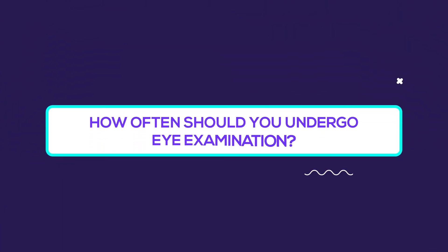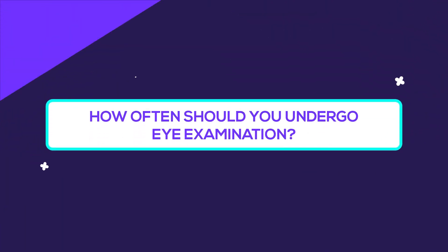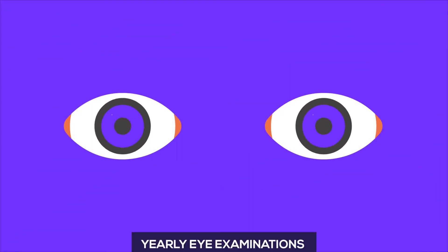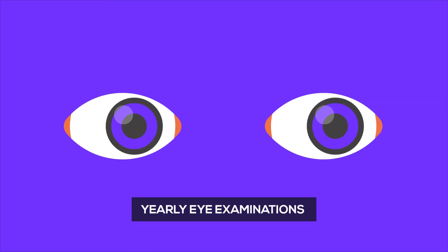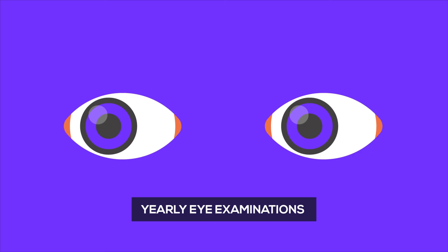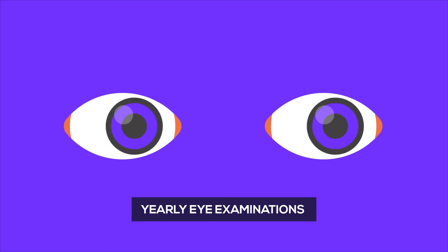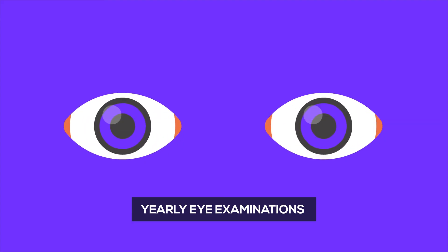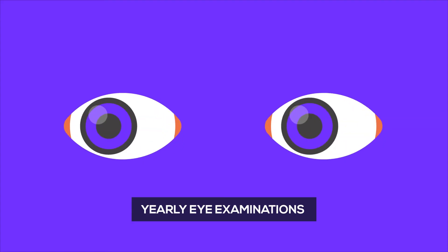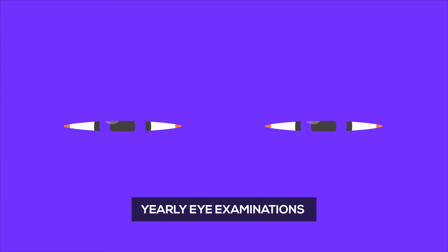How often should you undergo eye examination? Yearly eye examinations are recommended for people with diabetes. This yearly screening should start right after the diagnosis in patients with type 2 diabetes, and within 5 years of diagnosis in patients with type 1 diabetes.